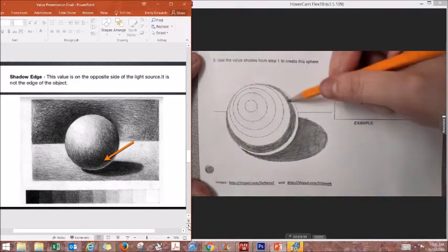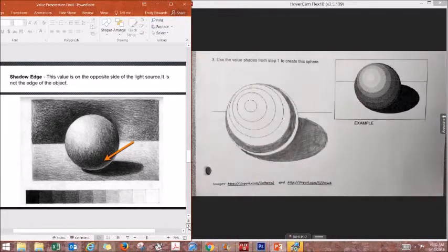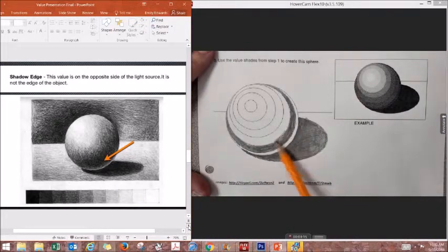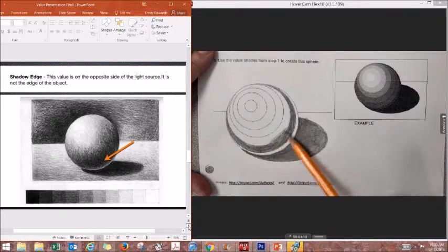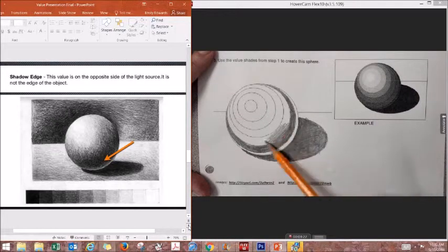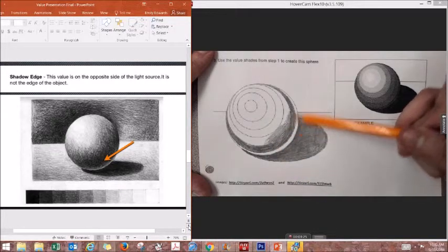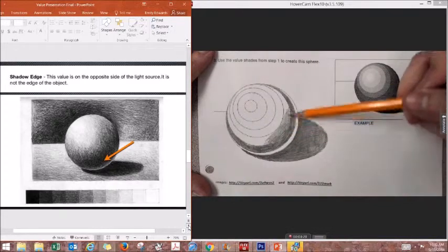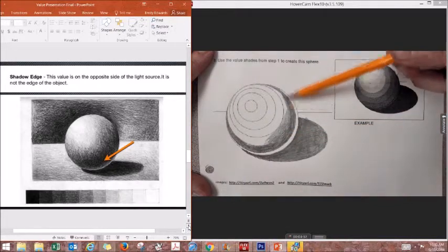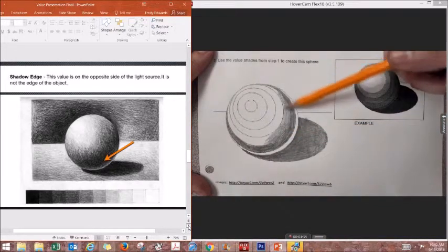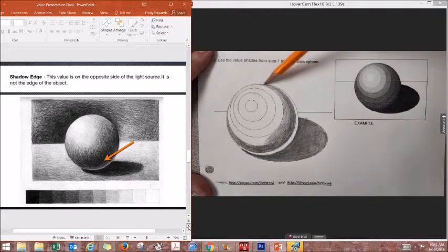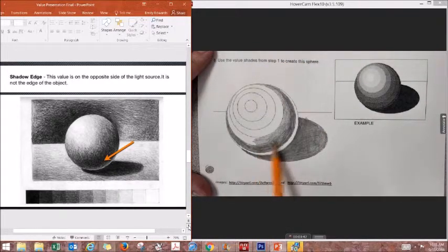When I do my shadow edge, I am actually going to do a couple of my sections of this sphere because it takes up more than just one little ring. I am going to do maybe two to three rings. As I do each ring, the value should get a little bit lighter, but you do not want to see where the dark meets the light. You want them to shade and blend together.